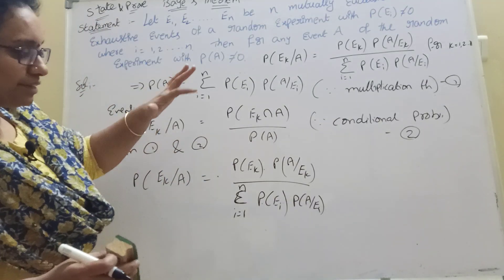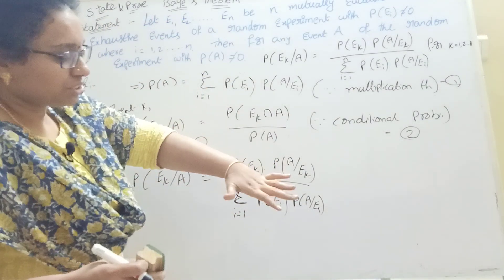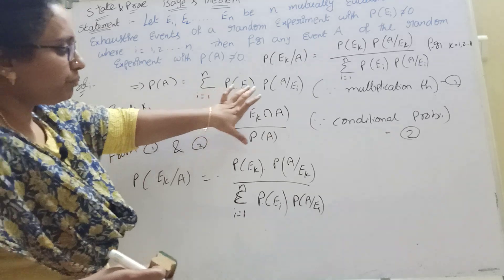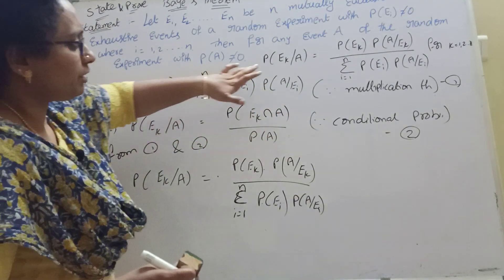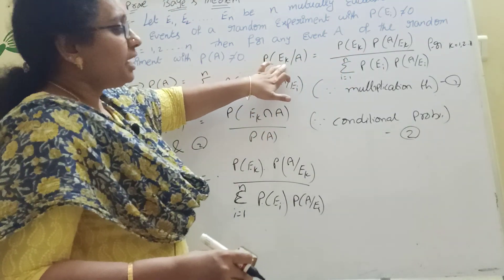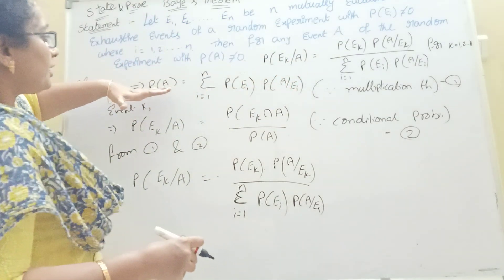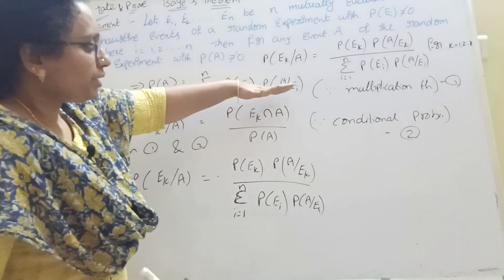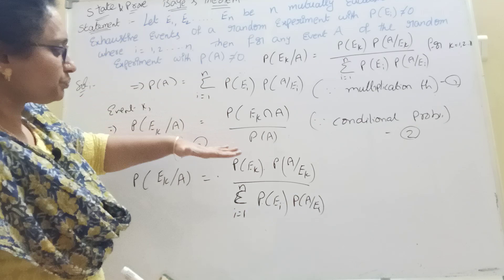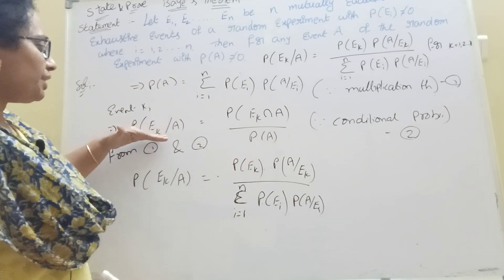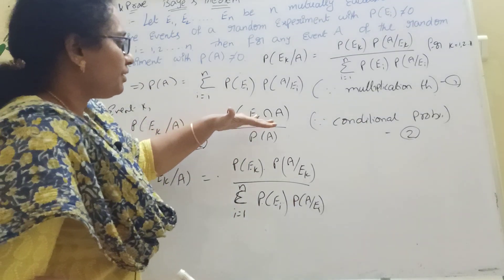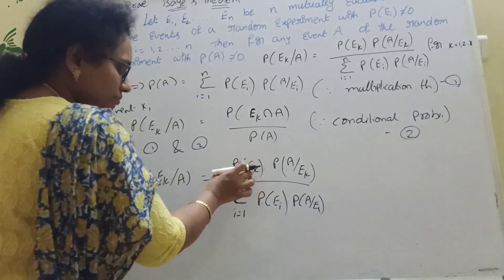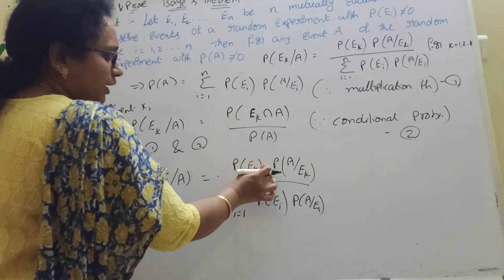Now, when we apply P of A — the multiplication theorem is P of A given Ek. This is the conditional property. P of A, multiplication property. P of A given Ei is the formula. Now let us do conditional property: P of Ek given A equals P of Ek intersection A divided by P of A. We have conditional property, Ek intersection A, and the formula: P of Ek into P of A given Ek.